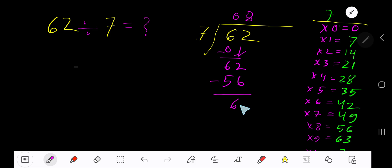So our answer should be 8 remainder 6. If you want to write your answer in decimal form, then take your decimal, add number of zeros.